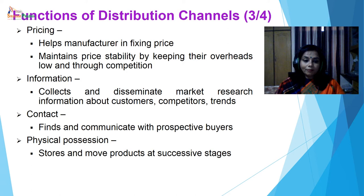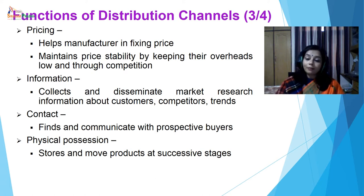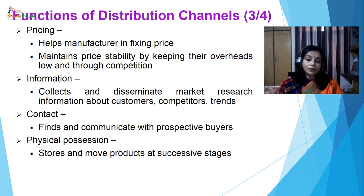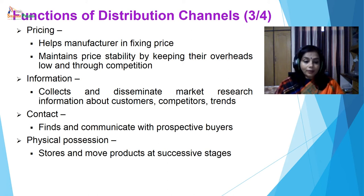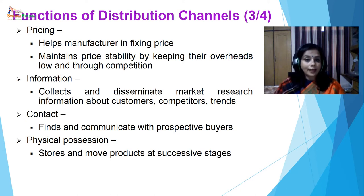The next function is pricing. They help the manufacturer in fixing prices. They give all kinds of information to the manufacturer about the condition of the target market, the economy, as well as competitors' prices. Accordingly, the manufacturer fixes the prices. They also maintain price stability by keeping their overheads low and through competition. Information is another function — they collect and disseminate market research information about customers, competitors and trends and provide it to the manufacturers. Contact is maintained by them; they find and communicate with prospective buyers. Physical possession also — they store and move products at successive stages and bear the risk of possessing the product.